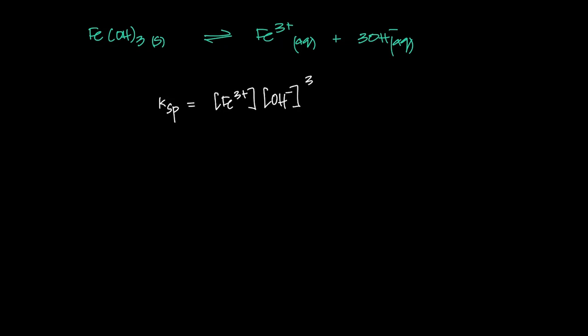The unit for this will be one concentration term here and three concentration terms here, making a total of four concentration terms. So you can do concentration to the power 4, which is what? Moles per dm³ to the power 4, which simplifies to moles⁴ dm⁻¹².